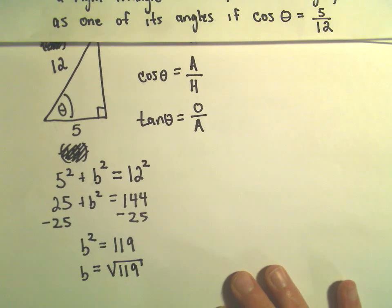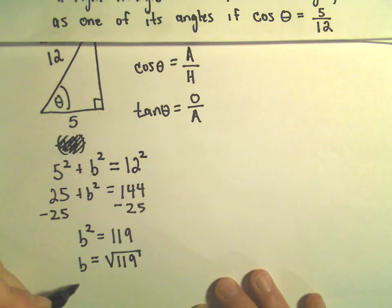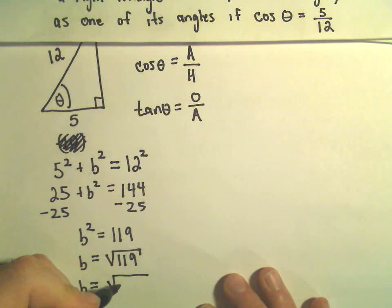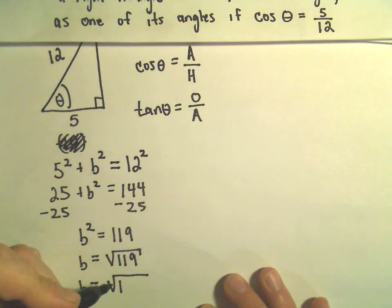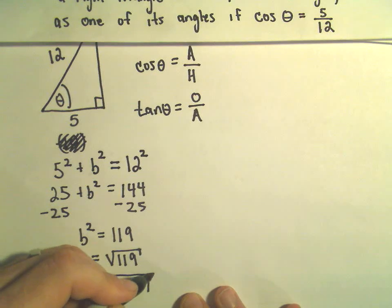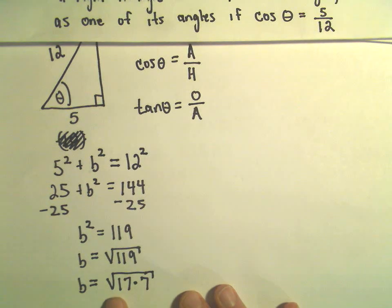So a lot of times if these simplify, they'll want you to try to reduce the radical. And 119 actually does factor. I believe that's going to be, how about 17 times 7? That's going to work. 7 times 10 is 70. 7 times 7 is 49. 70 plus 49 would give us 119.